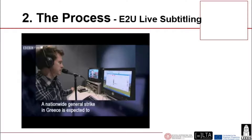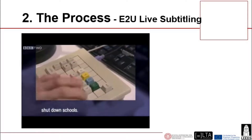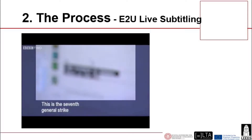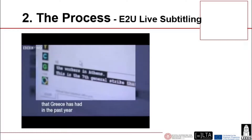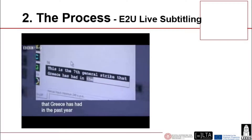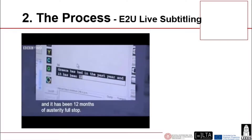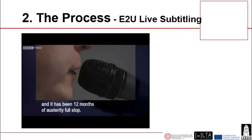Is expected to ground flights, shutdown schools. This is the seventh general strike that Greece has had in the past year, and it has been 12 months of austerity.